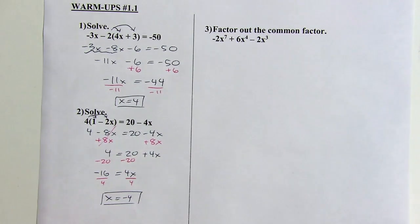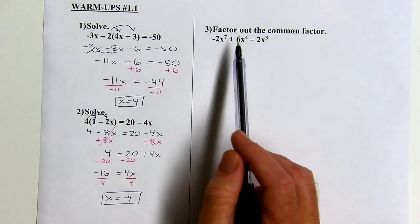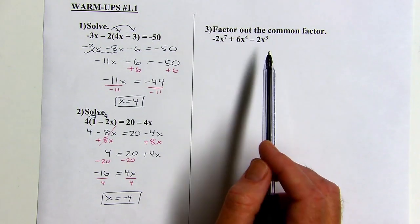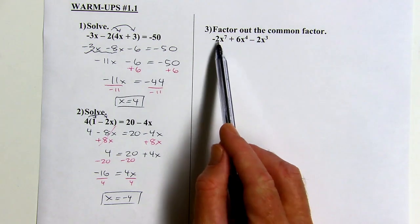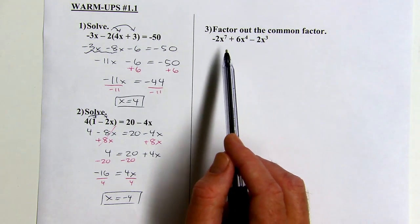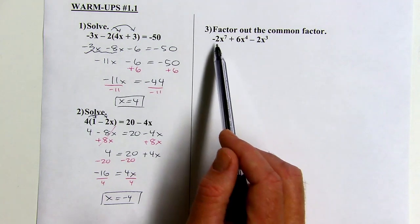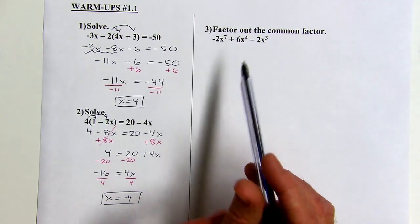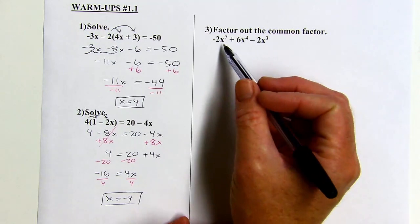Okay, and then our last problem here, we're going to factor out a common factor. So, I'm looking at the three terms, and I'm thinking, what goes into all three terms? So, I'm noticing that these are all even numbers, so that means that 2 would go into them. And I'm thinking, is there anything bigger, like 4 or 6? No, 2 is the biggest number that goes into all three terms. But they also all have x's.